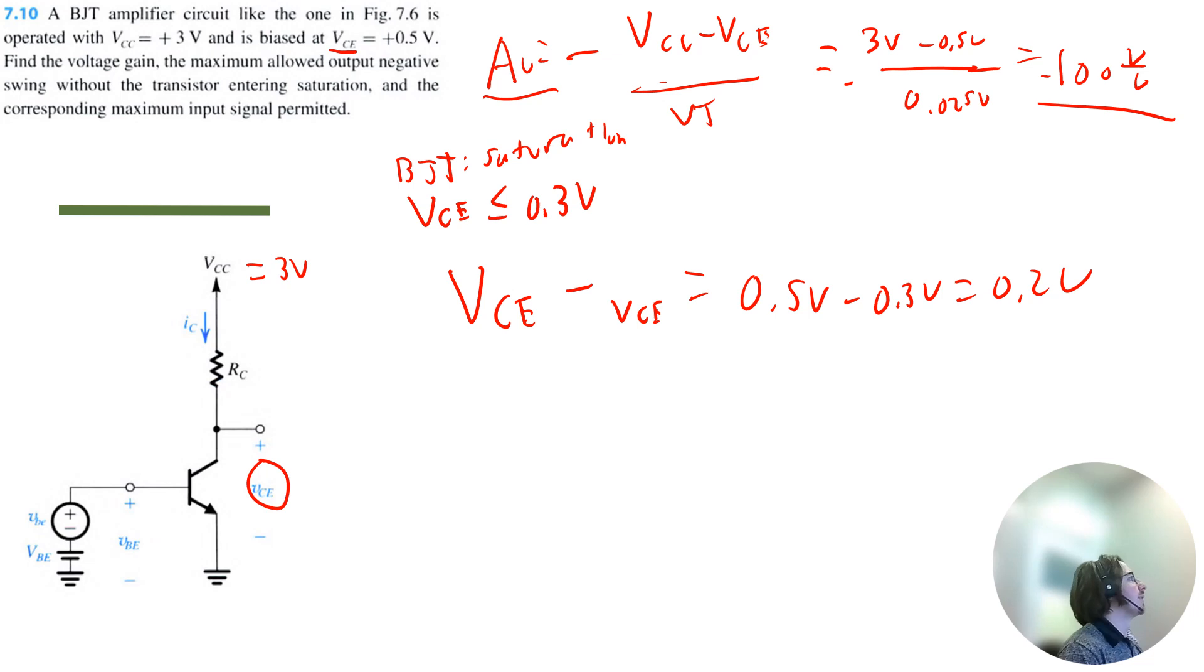So this would be the maximum allowed output negative swing. I usually denote swings by like this little hat. So I'll do 0.2 volts there.